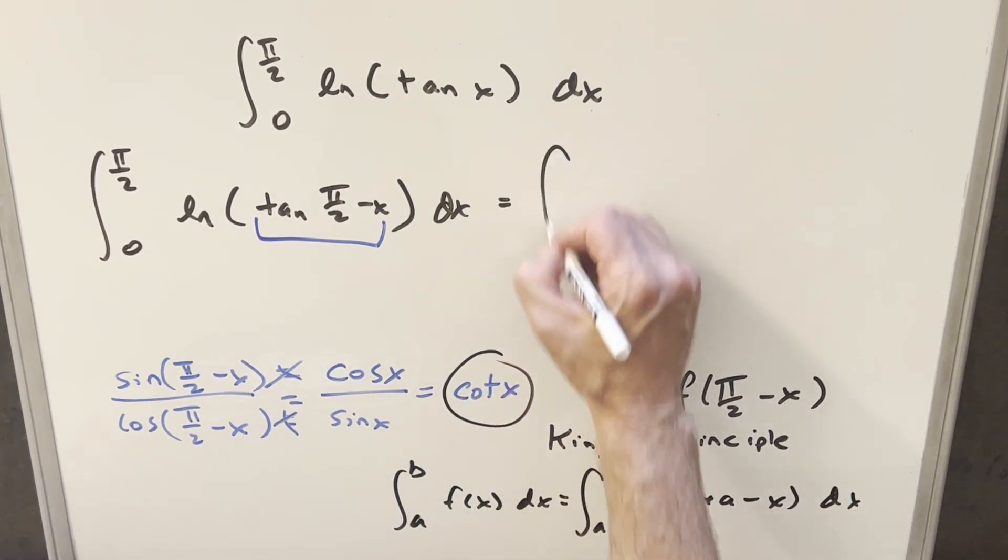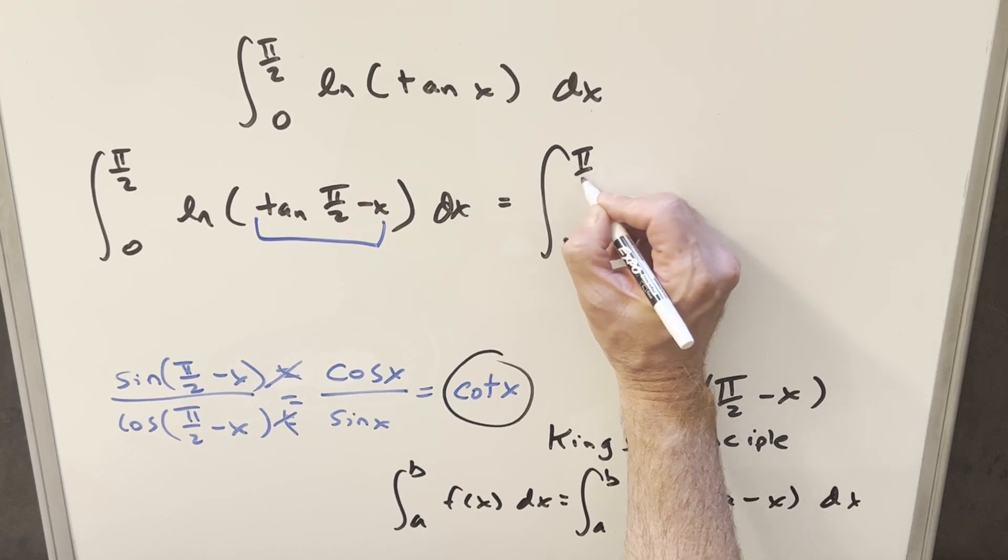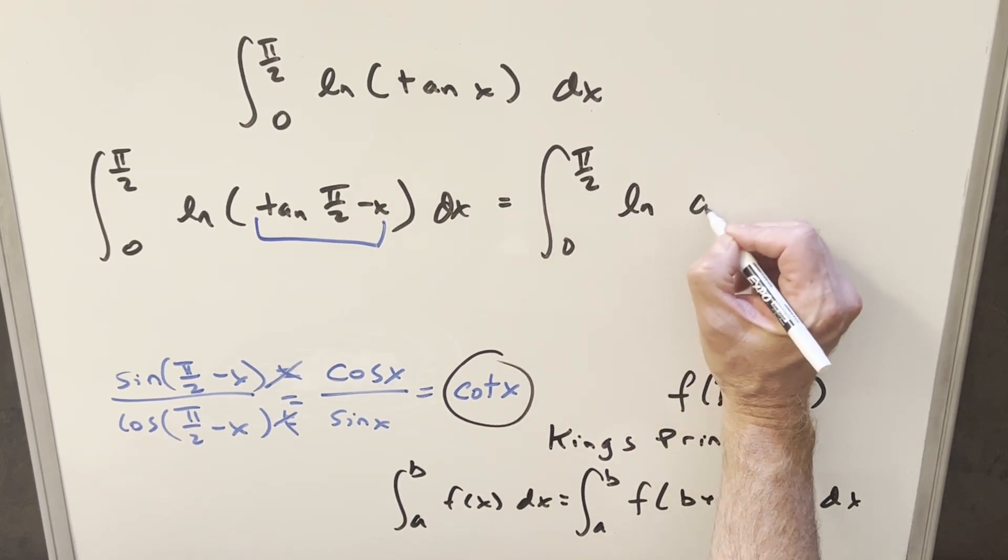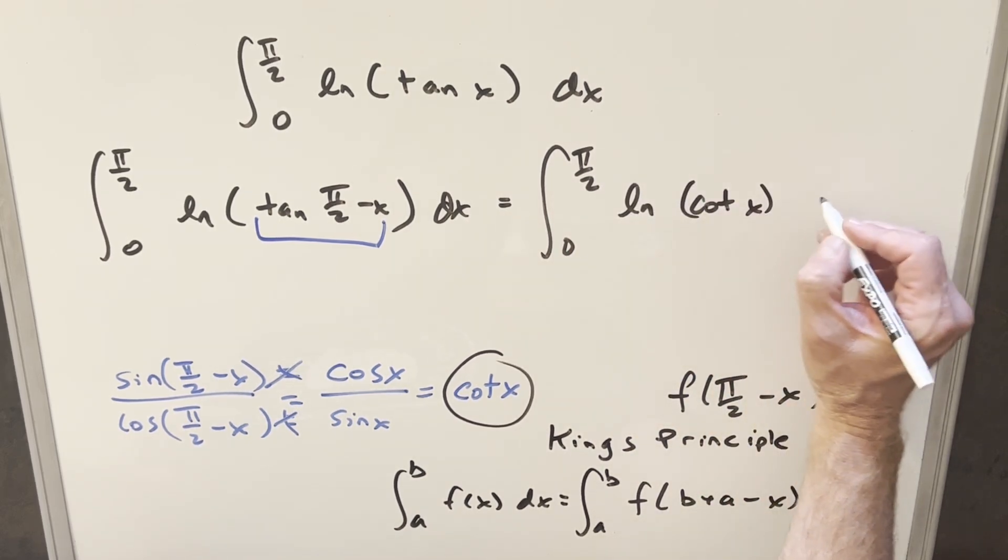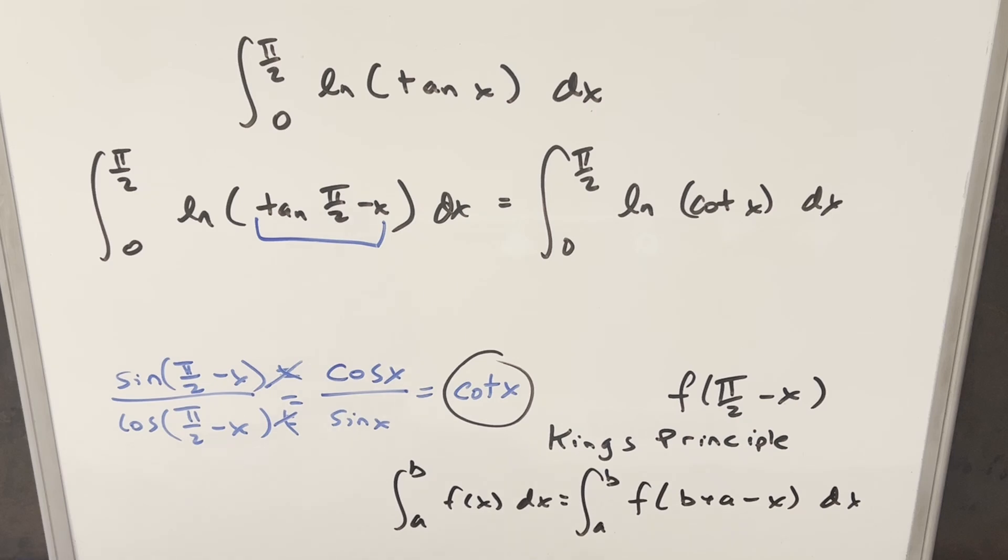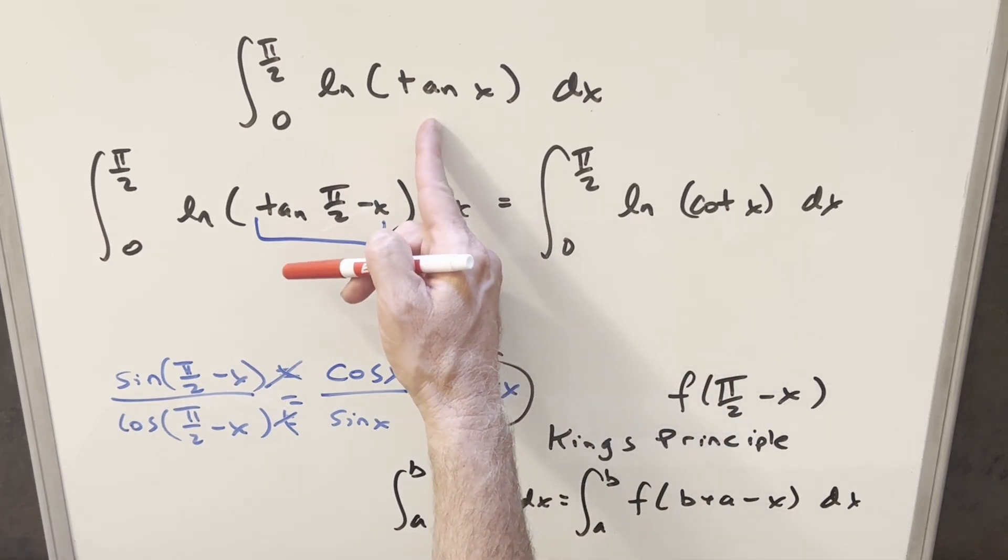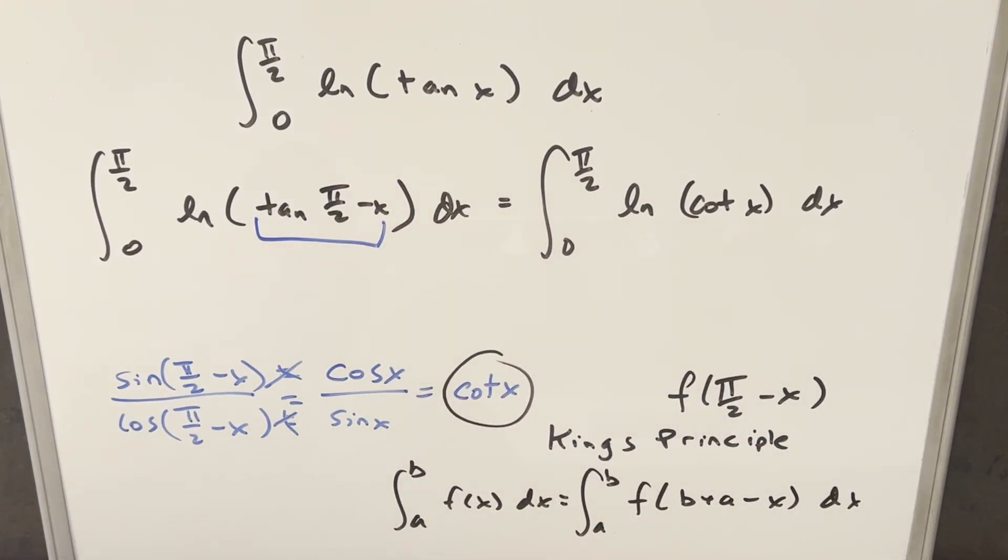So using this, we can come back to our integral, still going from 0 to pi over 2, and now we have just natural log cotangent of x dx. And then from here, you see that what we have here is pretty similar to what we have here. Cotangent is just the reciprocal of tangent.